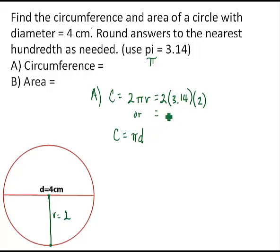So calculating that, we end up with 12 and 56 hundredths when you multiply that out: 2 times 3 and 14 hundredths and then times 2 again. And that, of course, is in centimeters.